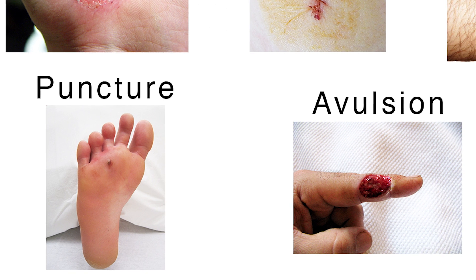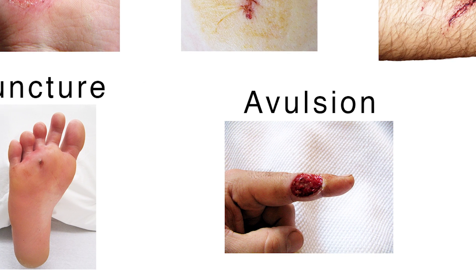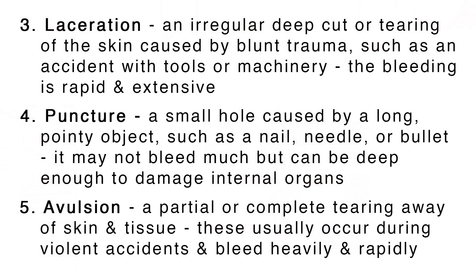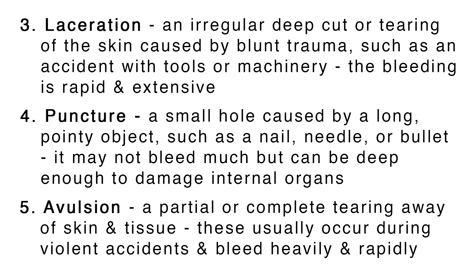Fifth, an avulsion is a partial or complete tearing away of skin tissue. These usually occur during violent accidents and bleed heavily and rapidly.